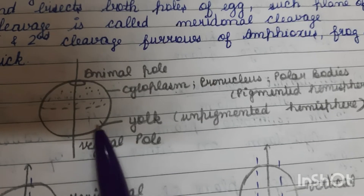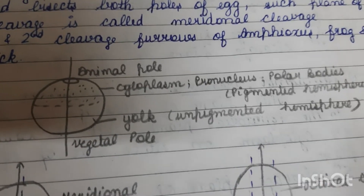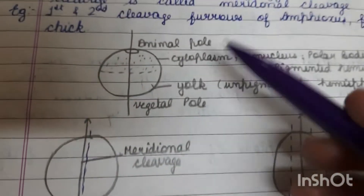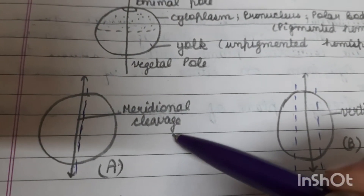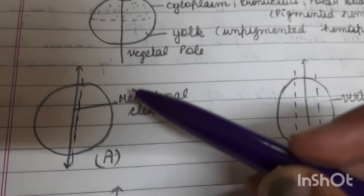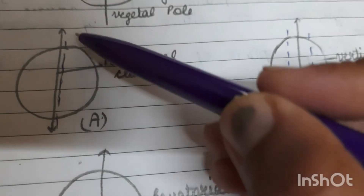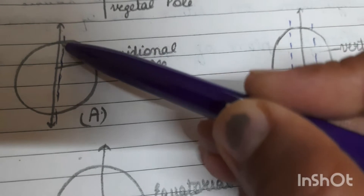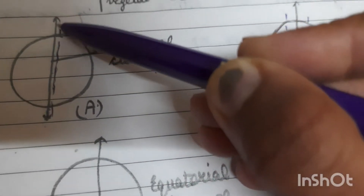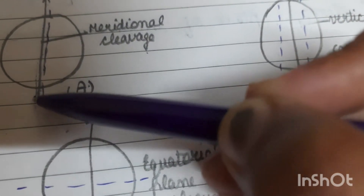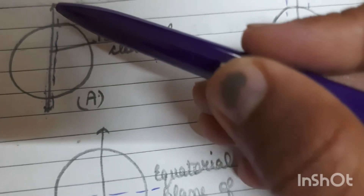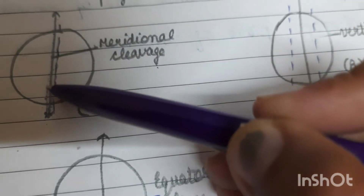Now, when we talk about meridional cleavage, the cleavage passes through both the animal pole and the vegetal pole through the center, bisecting both poles. This is known as the meridional cleavage.